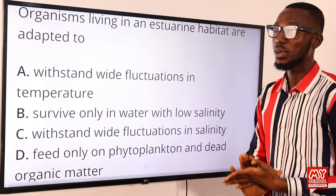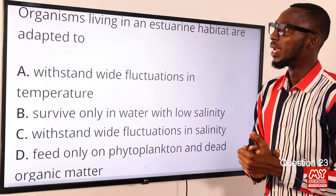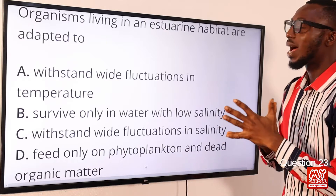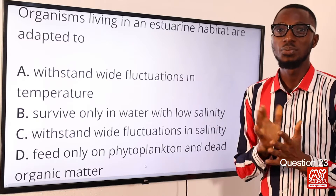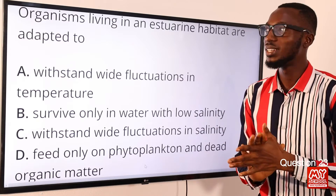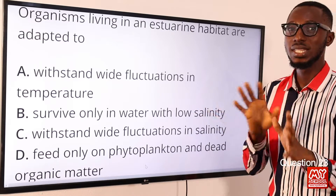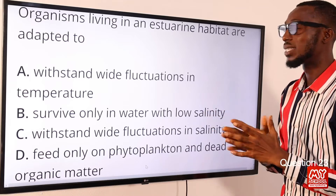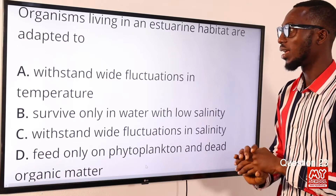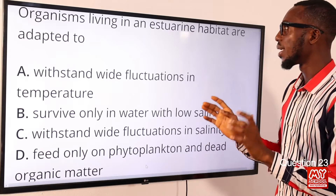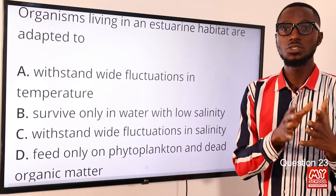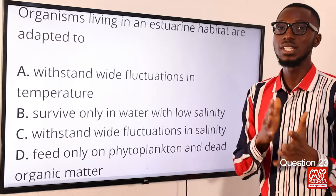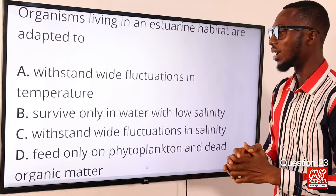Question 23. Organisms living in an estuarine habitat are adapted to what? They cope with fluctuating levels of salinity or salt. An estuarine habitat is actually where fresh water and salt water mix, resulting in brackish water.